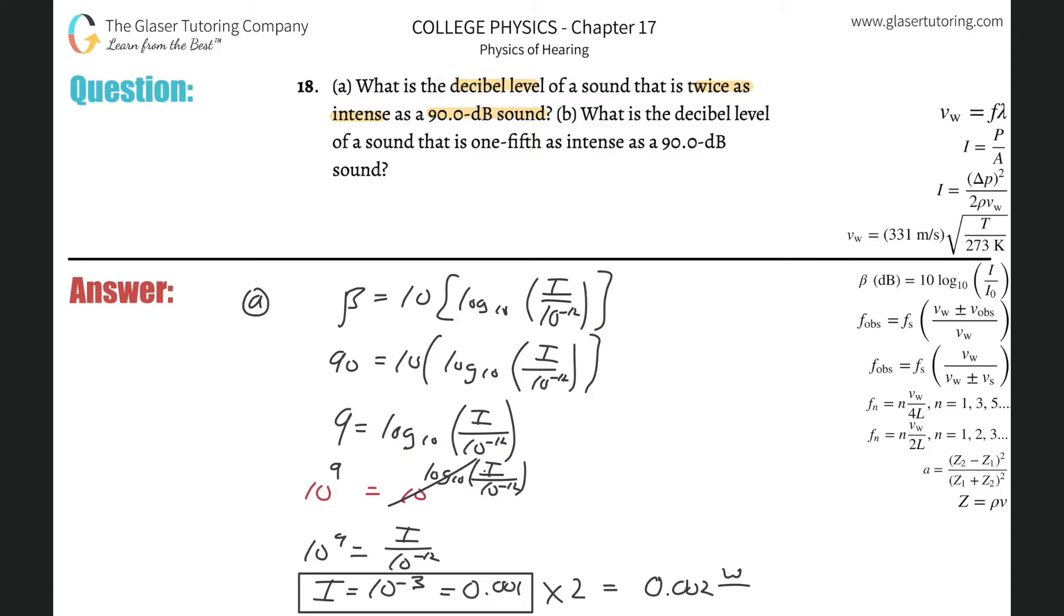Well, it's simply going to be 0.002 now. That's the intensity, okay, that's watts per meter squared. But I don't want to know that. I need to know the decibel value. So guess what we got to do? We got to basically do it all again.